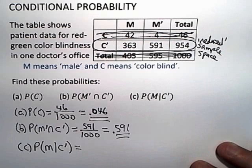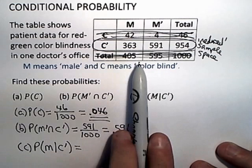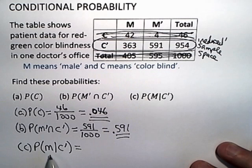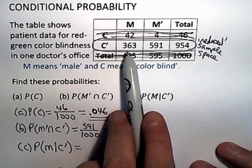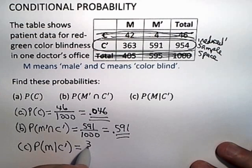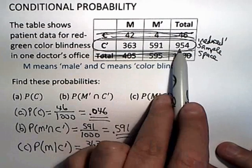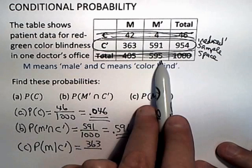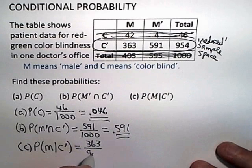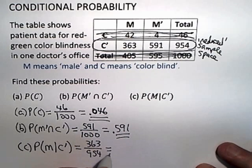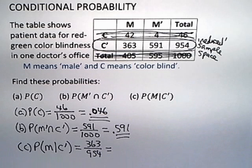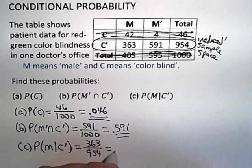It consists simply of that row of non-colorblind patients. So given that the patient is not colorblind, the probability of that patient being male: there are 363 male patients out of, remember we've reduced the sample space now, so there aren't a thousand anymore, there are only 954. If we want to write that as a decimal to the nearest one thousandth, three decimal places, we would end up with 0.381.